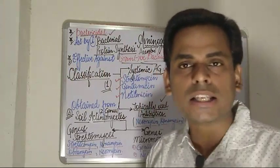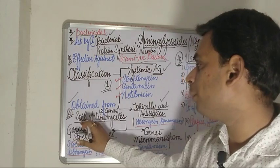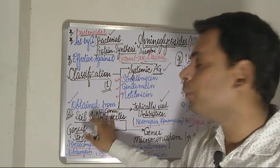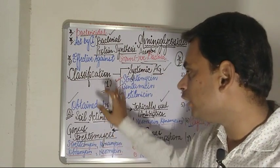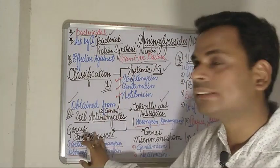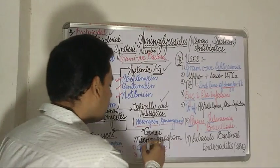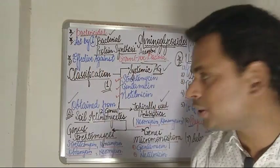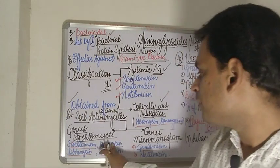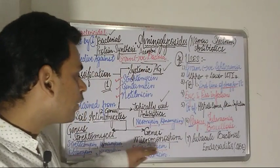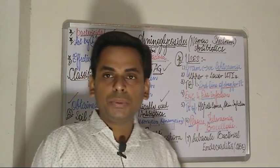Another classification is based on from where they are obtained — from soil actinomycetes. They are broadly subdivided into two categories: those derived from the genus Streptomyces and those derived from the genus Micromonospora. Drugs derived from Streptomyces include streptomycin, tobramycin, kanamycin, and neomycin. Drugs derived from Micromonospora include gentamicin and netilmicin.